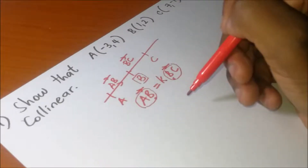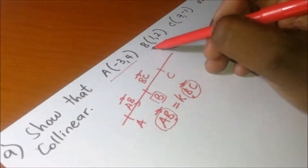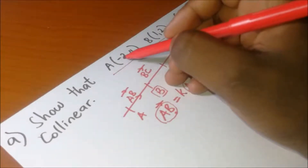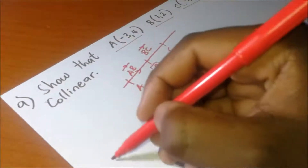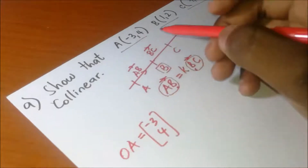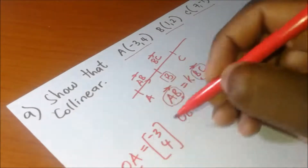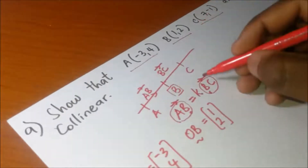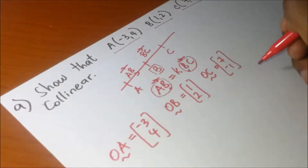To find AB we only have coordinate points A, B, and C, so we need to first find the position vectors. Our coordinate point A is (-3, 4), so the position vector OA is (-3, 4). Our coordinate B is (1, 2), so position vector OB is (1, 2). Then position vector OC is (7, -1).